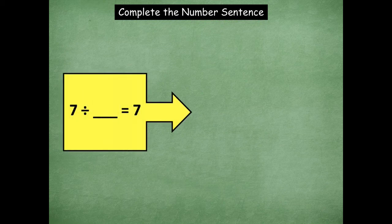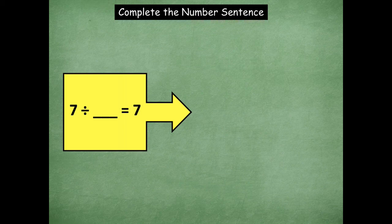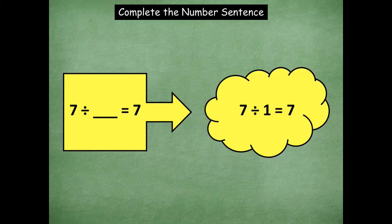7 divided by blank equals 7. What do I have to divide 7 by to be able to have that equal 7? 7 divided by 1 equals 7. Awesome.